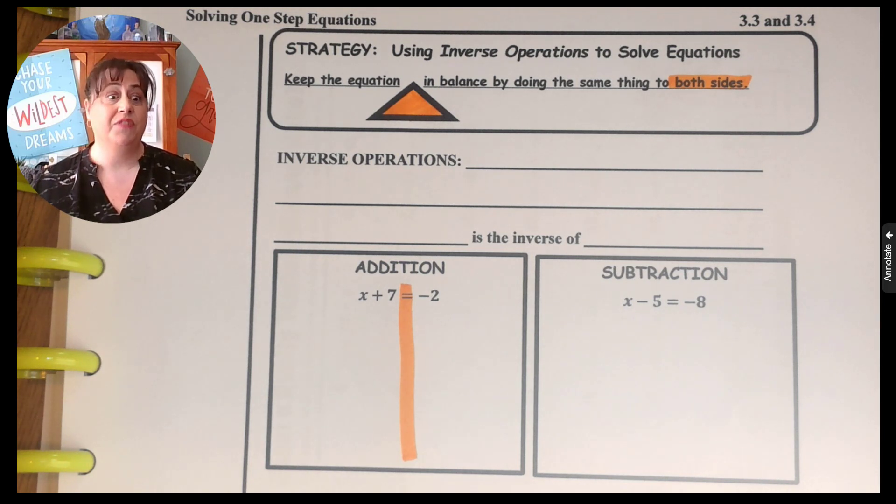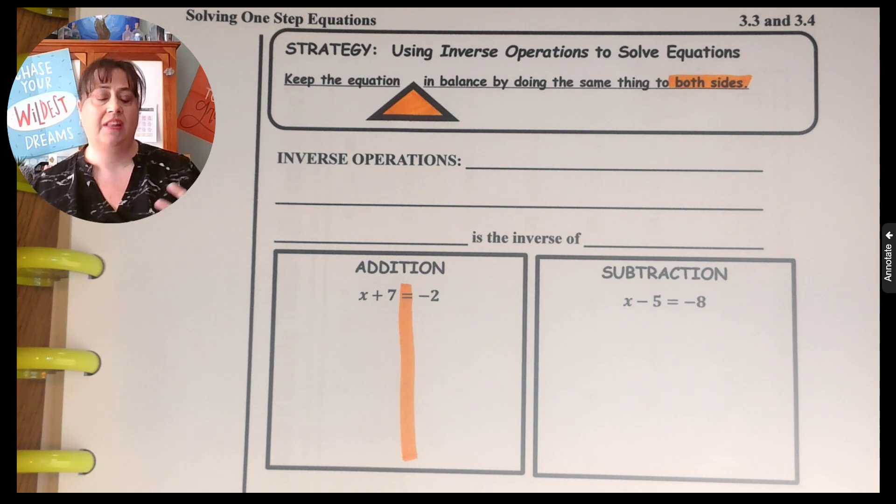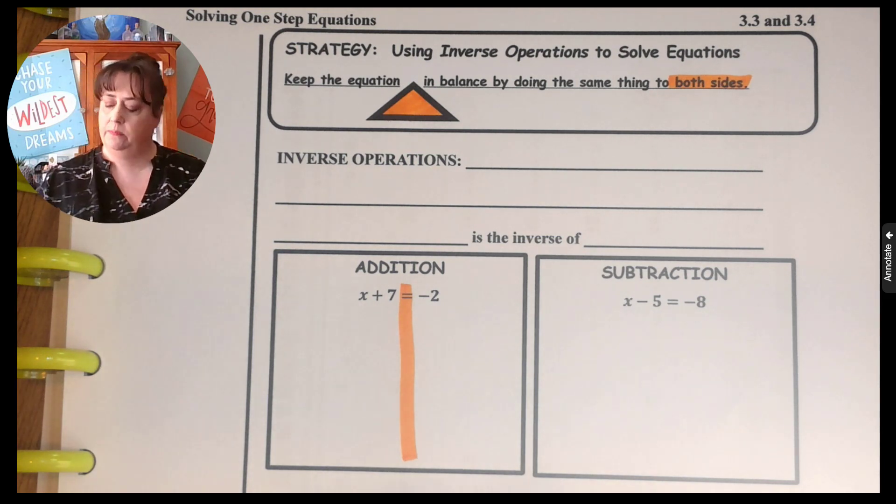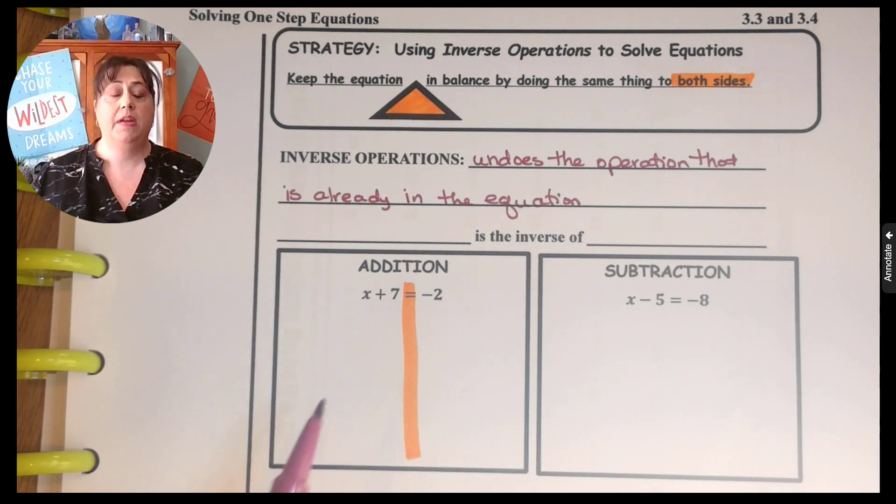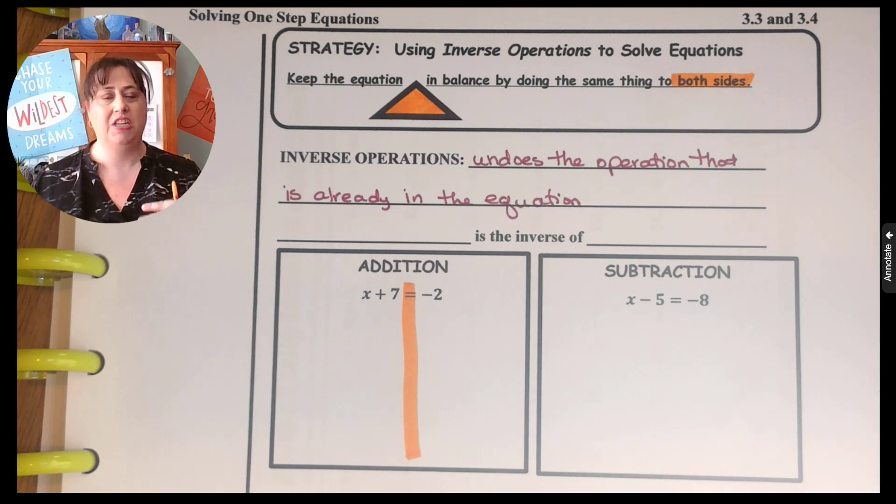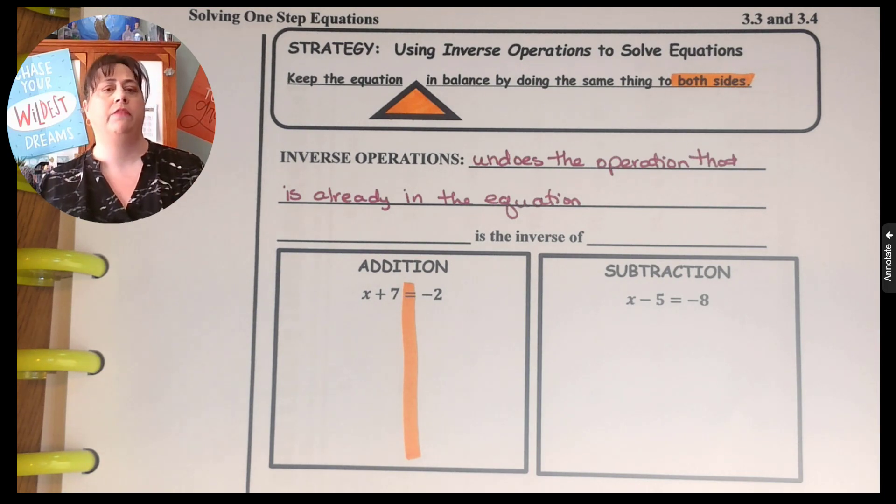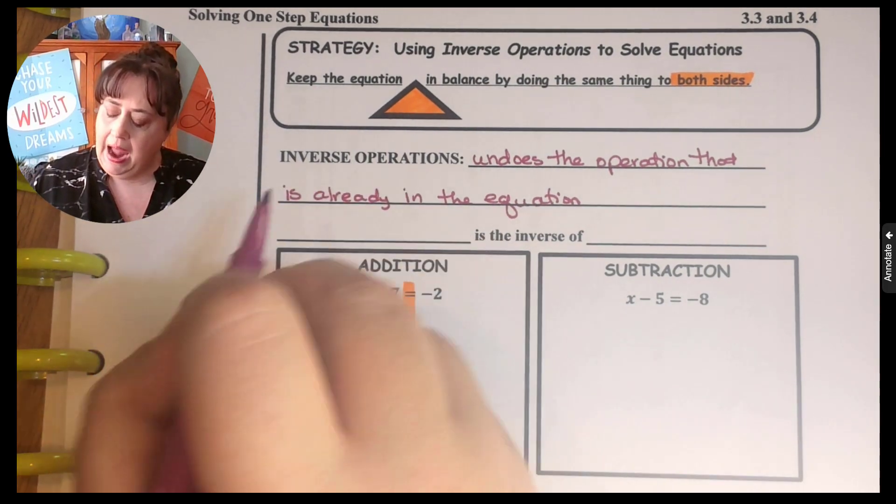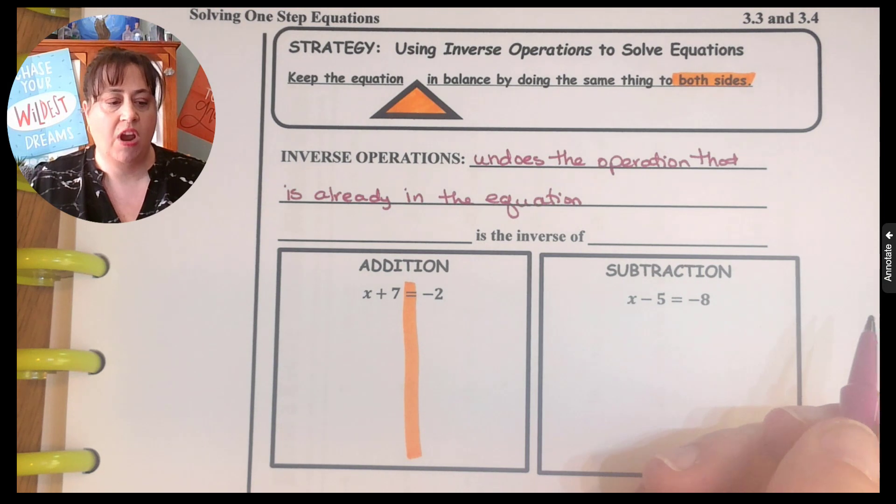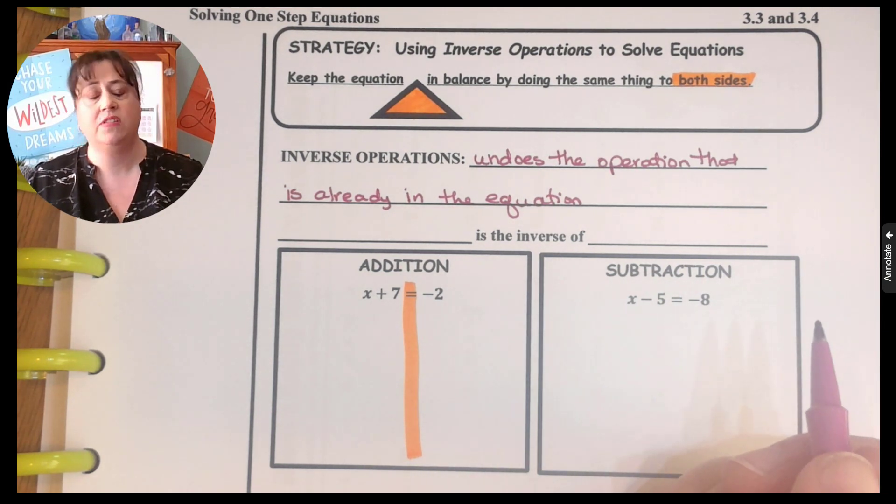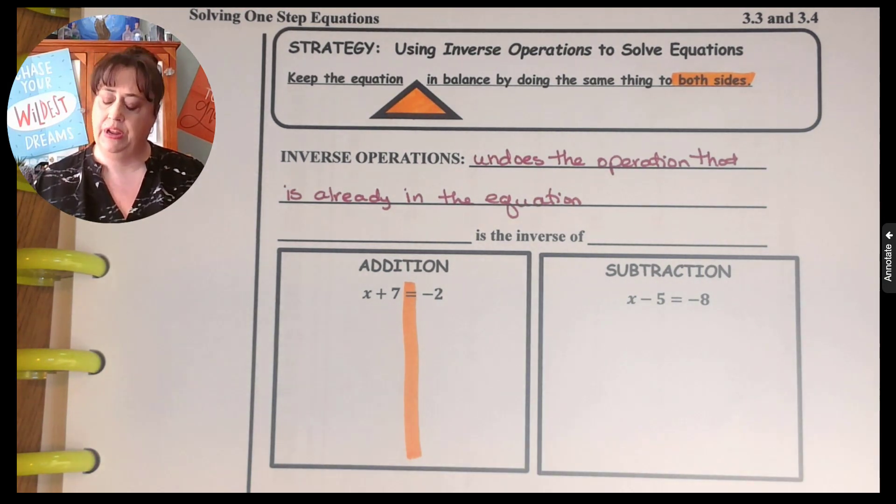So what do we mean by inverse operations? Well, inverse operation undoes the operation that is already in the equation. So for example, this equation right here has addition. If I want to undo addition, I'm going to use subtraction. Because if I wanted to get back to zero and I was at nine, I would then subtract nine. So that's undoing. They're called additive inverses. So adding is the inverse of subtracting, and subtracting is the inverse of adding. They go back and forth. They're inverses of each other.